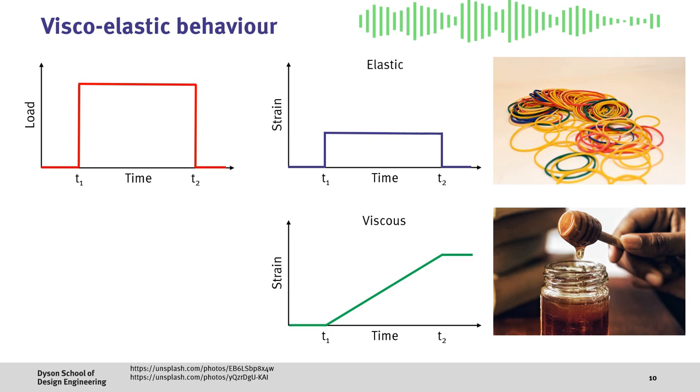For a viscous material like honey, whilst we apply a load, we get a constant strain increase in the material till the load is removed, and then it stays in its strained position.